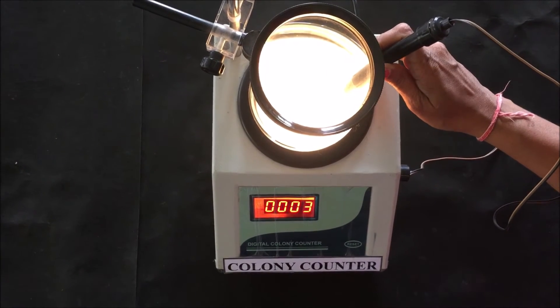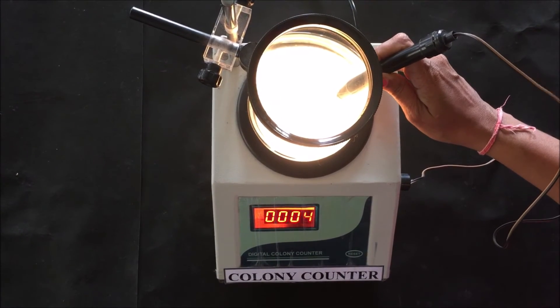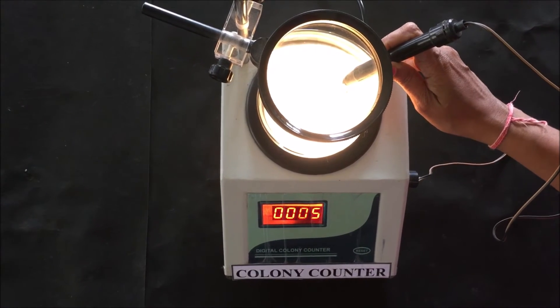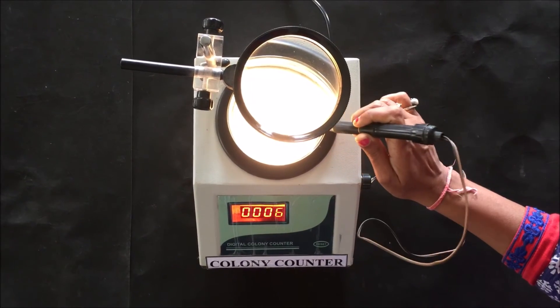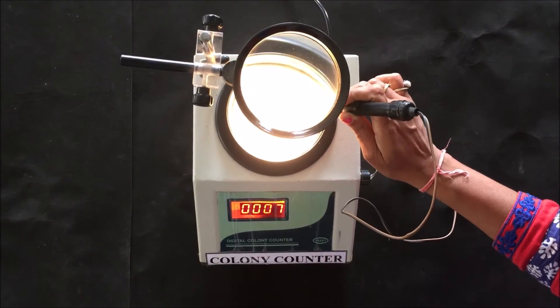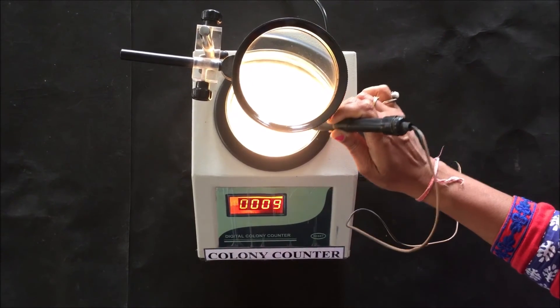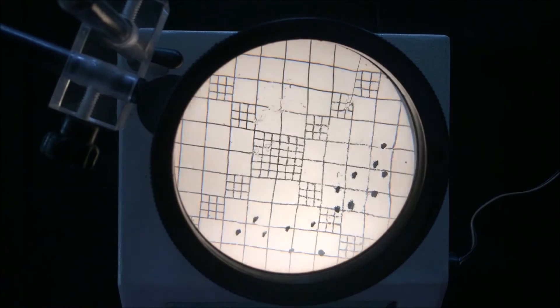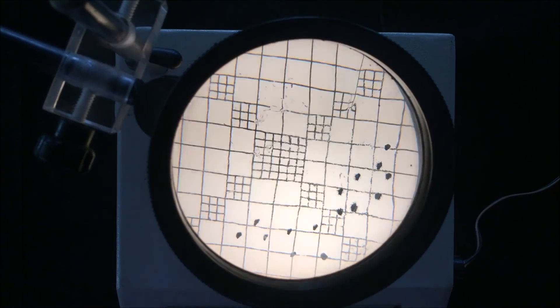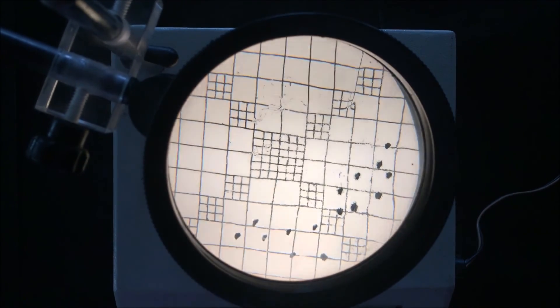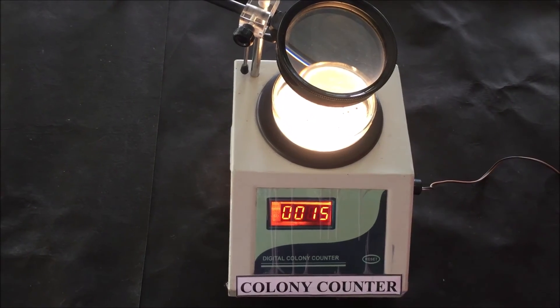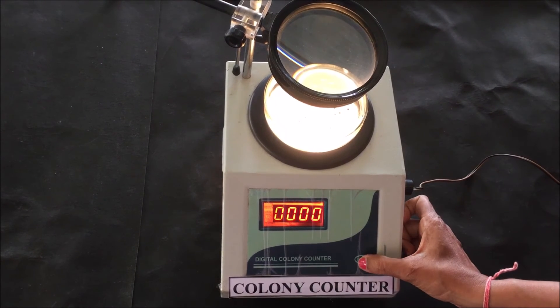Mark all the colonies on the petri dish by observing through the magnifying lens. After marking all the colonies, record the total number of the colony count from the display. Then press the reset button to set the reading to zero. Thank you for watching this video.